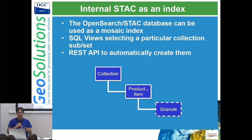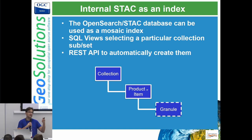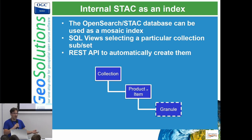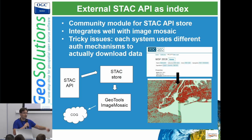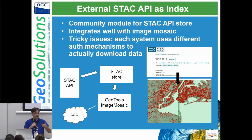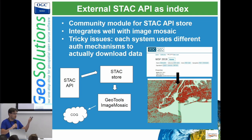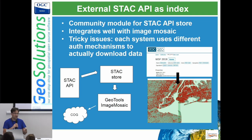We can use the internal STAC API as an index for the mosaic. Think about a collection with many products inside — we can take that search index and use it as the index for an image mosaic. You can ask GeoServer to make an image mosaic out of that collection, or a portion of it, choosing sub-parts of the collection to build a layer published through WMS and WMTS. Alternatively, you can connect to an external remote STAC API using the STAC store, which powers a local image mosaic by talking to the external STAC API, figuring out the needed assets, and using the COG plugin to read them and generate composite images.